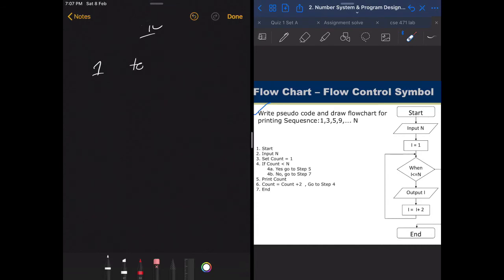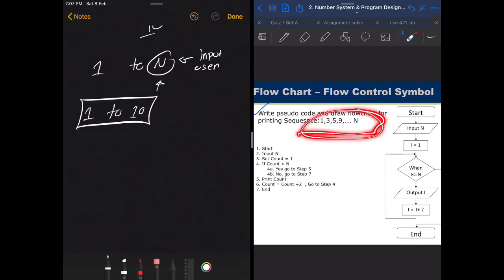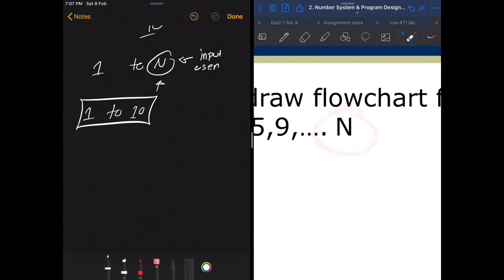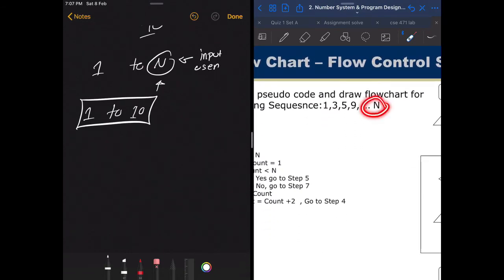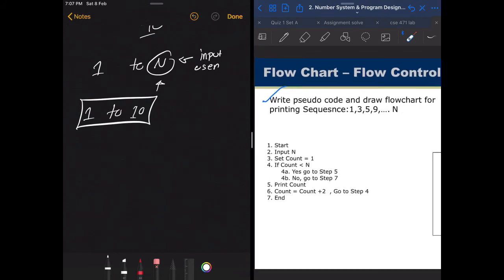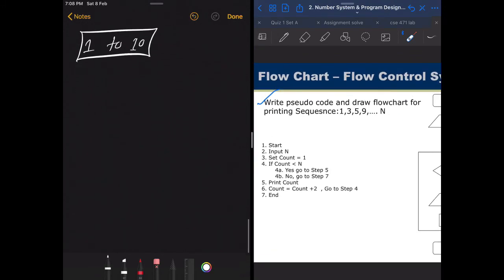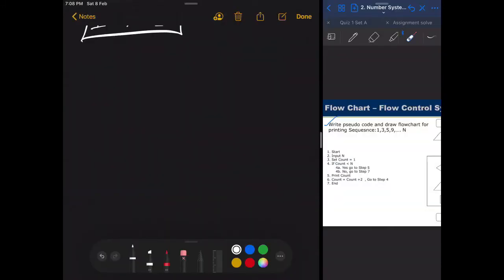In this question, we know where to start from. However, we don't know what N is, where we have to stop. That means that we have to take inputs from the user. However, in the previous example, we already knew where to start from and where to end, so there wasn't any need for user interactions. But in this question, we definitely need a value from the user as we need to know the value of N.